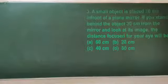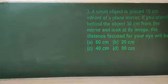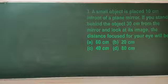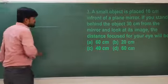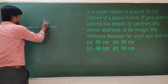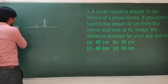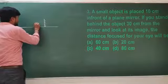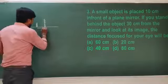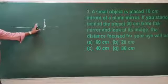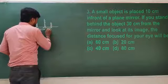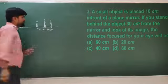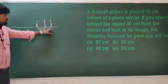Next question: a small object is placed at 10 centimeters in front of a plane mirror. If you stand behind the object, 30 centimeters from the mirror and look at its image — what is the distance your eye must focus? The object is placed at 10 centimeters from the mirror, so the image is also formed at 10 centimeters behind the mirror.